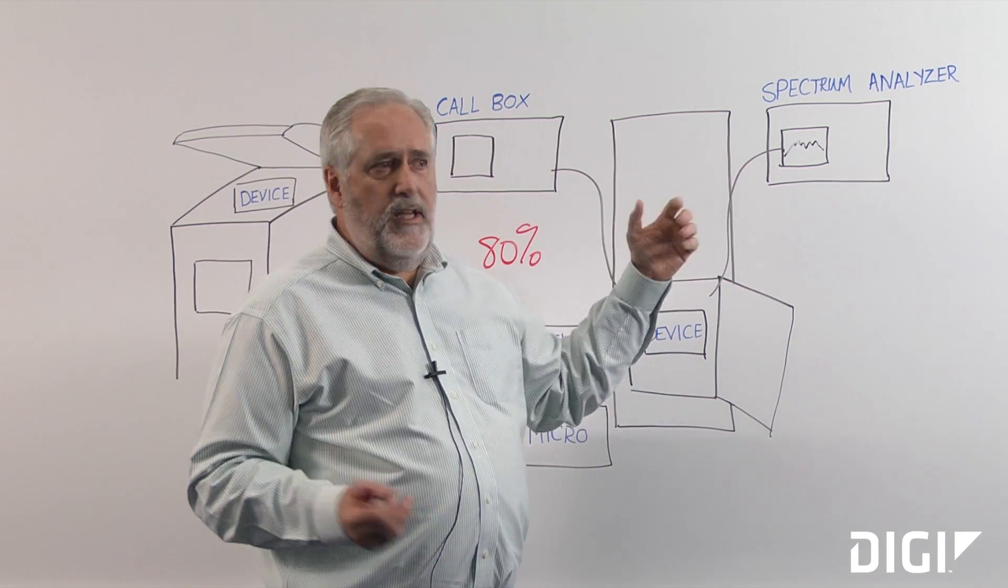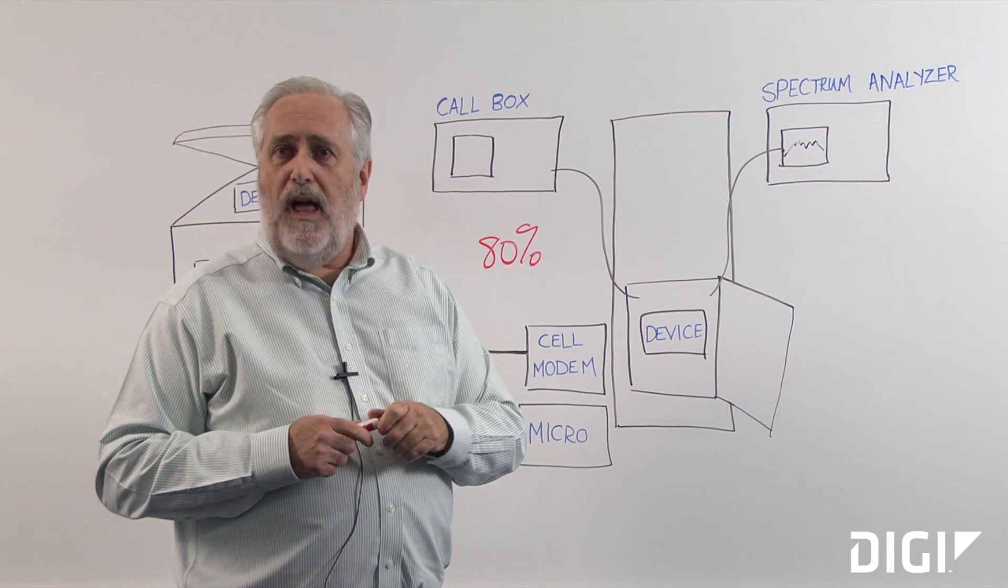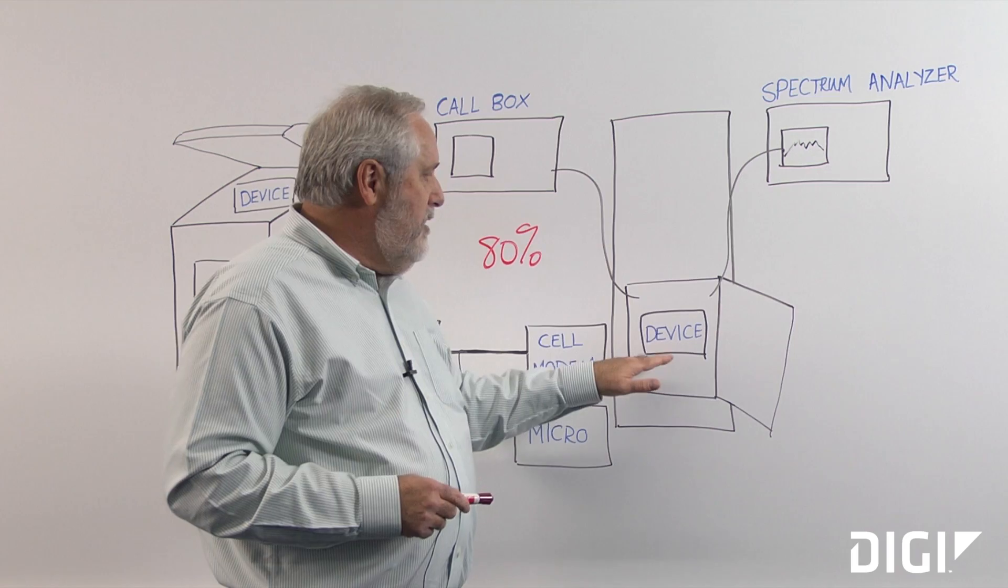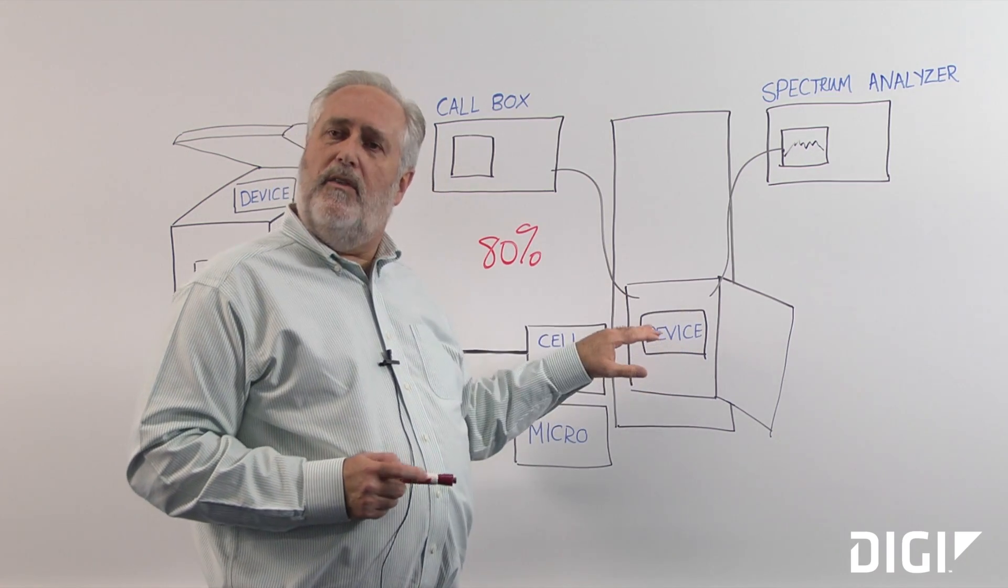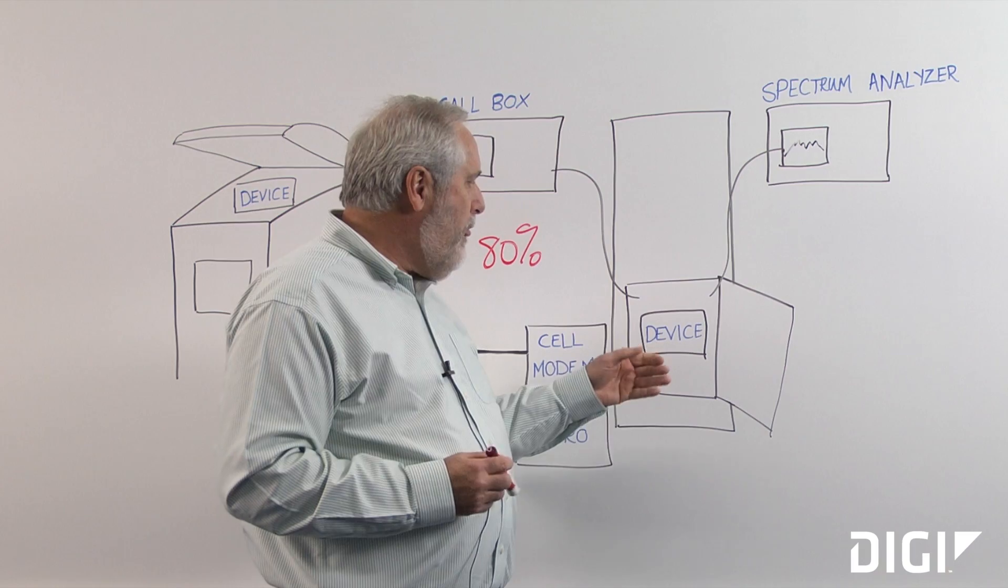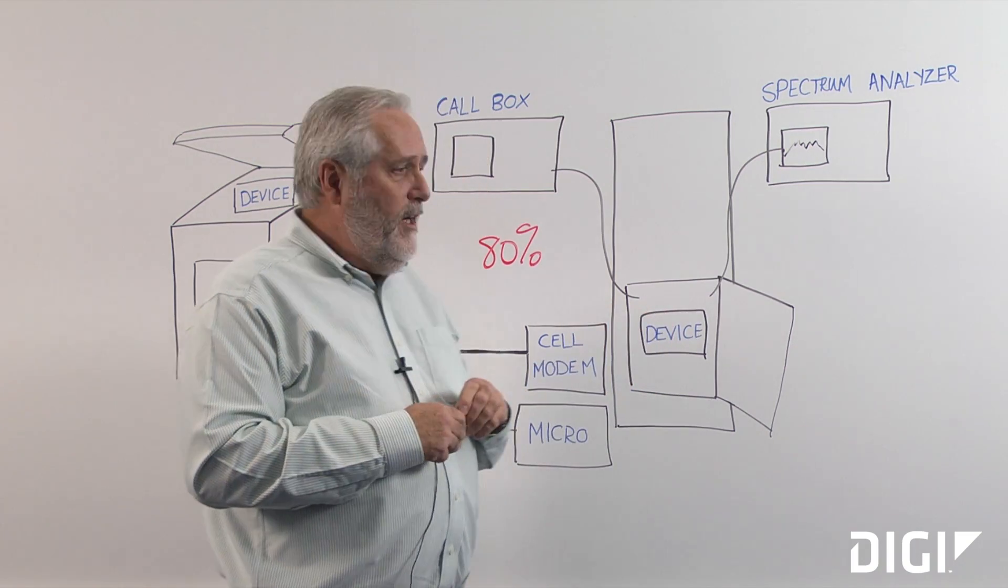Then we can look at those against what are the acceptable levels and find out where are they missing and by how much. Further then, we can use the spectrum analyzer to analyze where on the device are those emissions emanating from. And then look at a correction plan.